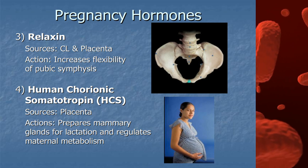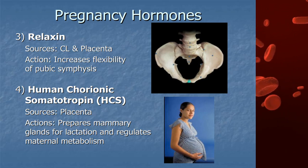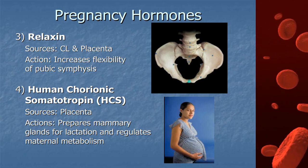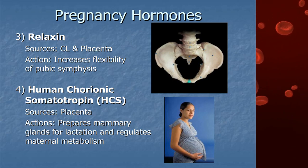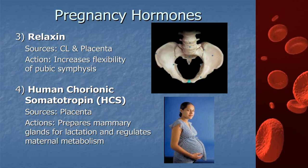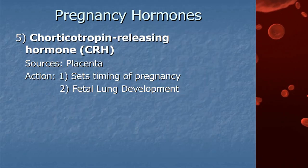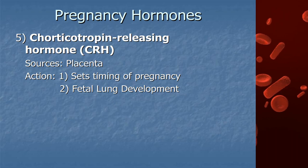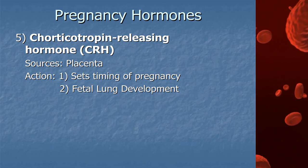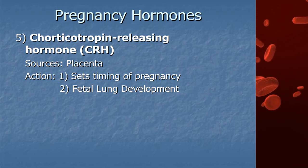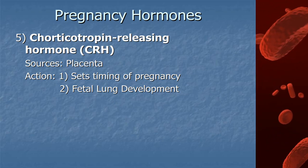Relaxin, produced primarily by the placenta, increases the flexibility of the pubic ligaments and pubic symphysis, widening the birth canal for delivery. Human chorionic somatotropin (HCS), also from the placenta, prepares the mammary glands for lactation and regulates maternal metabolism. Corticotropin-releasing hormone (CRH), produced by the placenta, has effects on both mother and fetus. In the fetus, CRH stimulates cortisol secretion, which helps set the timing of pregnancy by stimulating the uterus and stimulating fetal lung development through the development of surfactants.